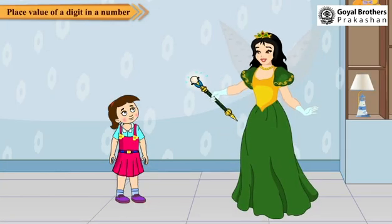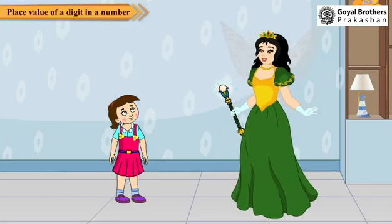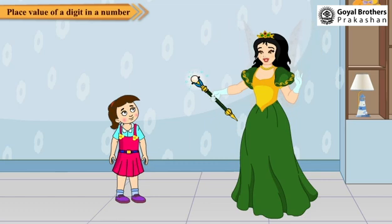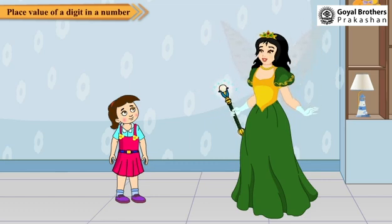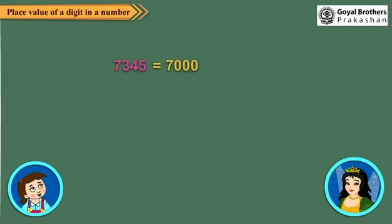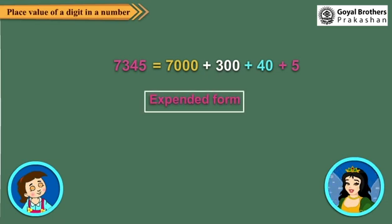Neha, I think now you have a clear concept of face value and place value. So you can write a number as the sum of place values of its digits. Okay, Tina. I will try. So I will give you a number: 7345. 7345 equals 7,000 plus 300 plus 40 plus 5. This is called the expanded form.